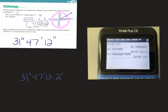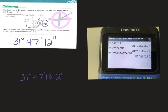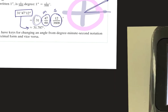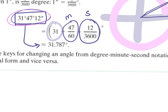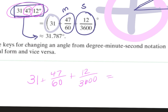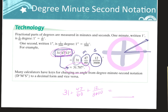If you don't have a calculator with that function, there's a manual process. To convert from degree-minute-second to decimal degree: keep the 31 degrees as is, then add 47 over 60 for the minutes, and add 12 over 3600 for the seconds. Add it all together and you get 31.787. Your calculator does this work automatically, but if you have a basic calculator, this is your other option.